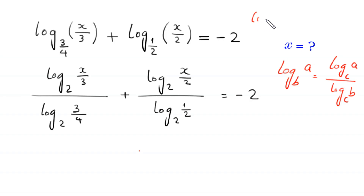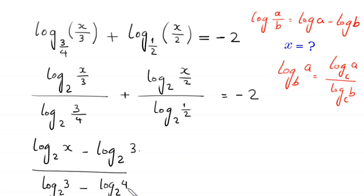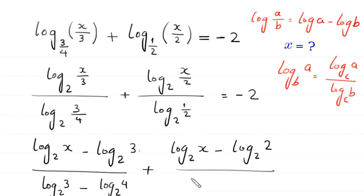Now by using the log property log(a/b) = log a minus log b, log base 2 of x/3 becomes log base 2 of x minus log base 2 of 3, and log base 2 of x/2 becomes log base 2 of x minus log base 2 of 2, is equal to negative 2.